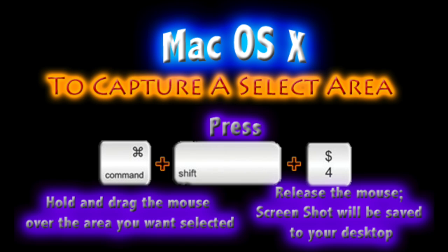To capture a selected area, press the following keyboard combination: the Command key, the Shift key, and the number 4 key. Hold the keys and drag the mouse over the area you want selected. Release the mouse and the screenshot will be saved to your desktop.